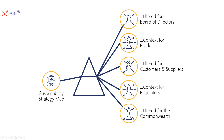Another context we might need is for regulators — how can we take existing metrics and put them into a different strategy map or different context? Likewise, for different reporting structures like FutureFit or the UN's SDGs. Through the sustainability scorecard, once we've established that overall model, we can restate it into a perspective or view that's useful for different stakeholders.